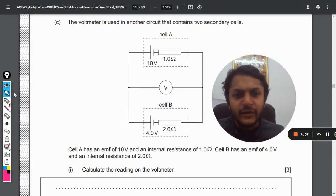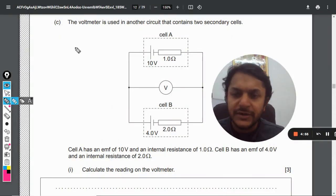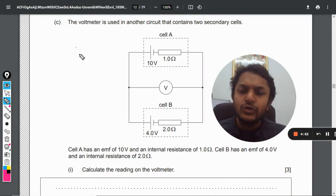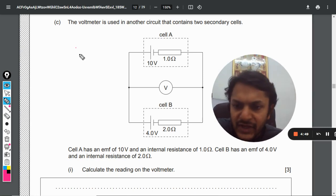Okay dear students, let us see what is there in this question. The voltmeter is used in another circuit that contains two secondary cells. Cell A has an emf of 10 volt and internal resistance of 1 ohm. Cell B has an emf of 4 volt and the internal resistance of 2 ohm. Calculate the reading on the voltmeter.